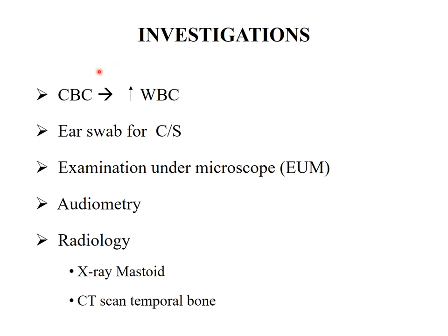Investigations, depending on the stage of the disease: complete blood count which will show neutrophilia; if pus has started oozing out, ear swab for culture and sensitivity; examination under microscope depending upon the stage; audiometry to check for hearing loss; tympanometry — if the eardrum is still intact it will show a flat curve; and radiology including X-ray mastoid and CT temporal bone, depending on the stage and condition of the patient.